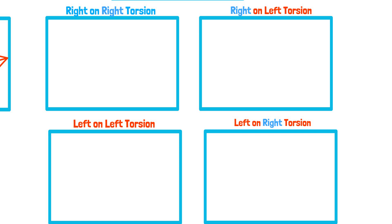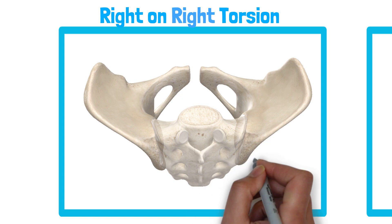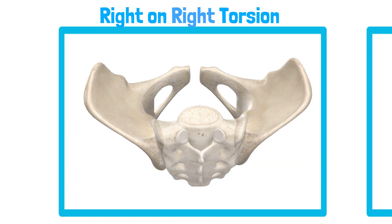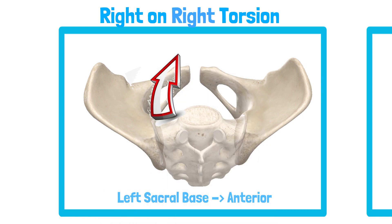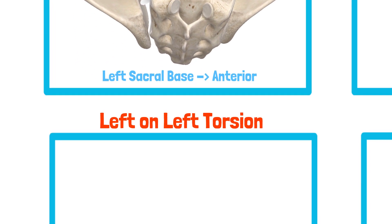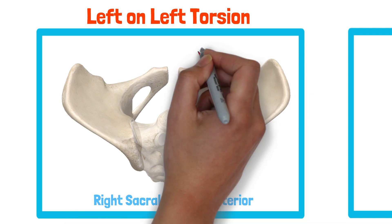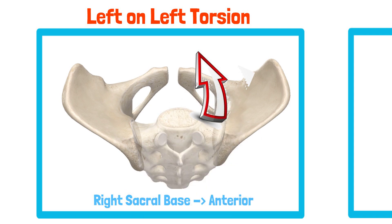Let's take a look at sacral rotation to the right on the right oblique axis. Here, we observe the movement by following the left sacral base moving anterior. Now let's take a look at sacral rotation to the left on the left oblique axis — follow the right sacral base moving anterior.